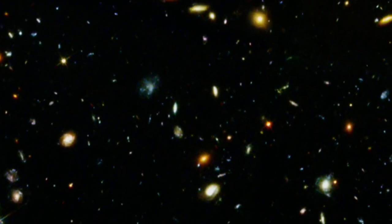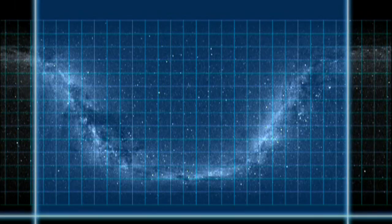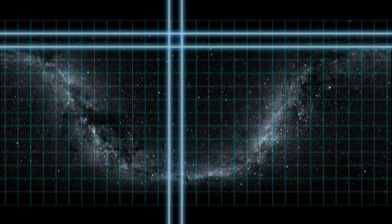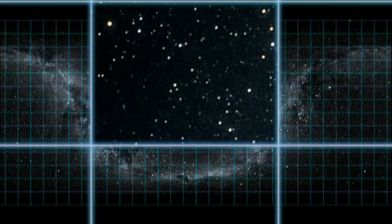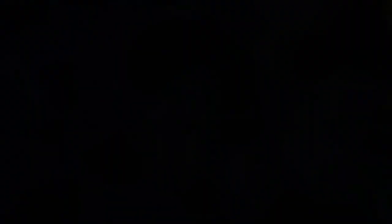The observed region of sky in Ursa Major, the Big Dipper, was carefully selected to be as empty as possible so that Hubble would look far beyond the stars of our own Milky Way and out past nearby galaxies.